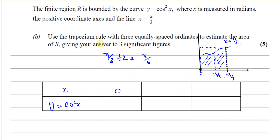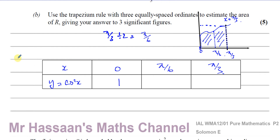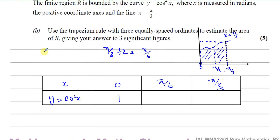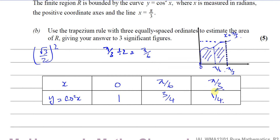Now we stick these values into our calculator. Cosine squared of zero: cosine zero is 1, so 1 squared = 1. Cosine of pi over 6 is root 3 over 2, so (root 3 over 2) squared = 3 over 4, which is three quarters. Cosine of pi over 3 is a half, and a half squared is a quarter. So our y-values are 1, 3/4, and 1/4.